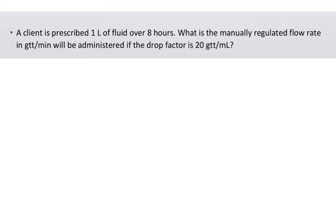So we got a little bit more going on here. So a client has prescribed one liter of fluid over eight hours. What is the manually regulated flow rate? Now, every time they say that, that means the GTTs per minute. Because if it was not manually regulated, it would be regulated with a pump. And the pump is solved with milliliters per hour. So manually regulated is GTT per minute. And you have a drop factor of 20. So again, let's go back to our milliliter times drop factor over all the minutes.